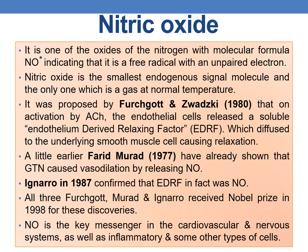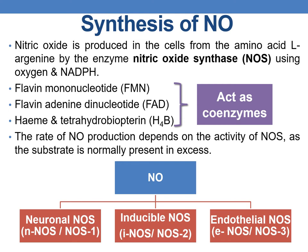NO is a key messenger in the cardiovascular and nervous system, as well as in inflammatory and other types of cells. Nitric oxide is produced in cells from the amino acid L-Arginine by the enzyme nitric oxide synthase (NOS), using oxygen and NADPH.